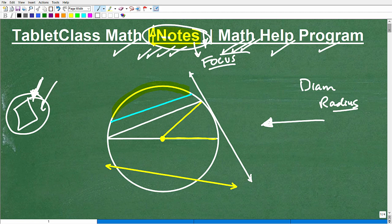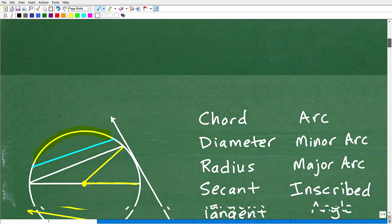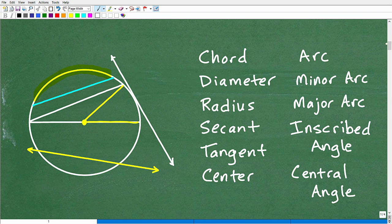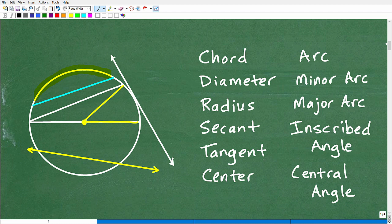So here's what we're going to define here. We might throw in a couple other little definitions. We'll see how it goes. But you can see I have chord, diameter, radius, secant, tangent, center, arc, minor arc, major arc, inscribed angle, and central angle. So if you want to pause the video and think about it for a second, which is which, that's what we're going to be doing. We're just going to take these terms and match it to the part of the circle.